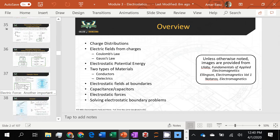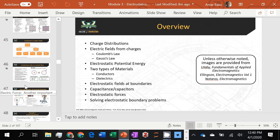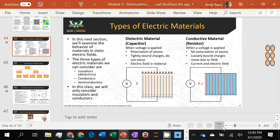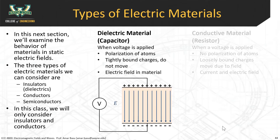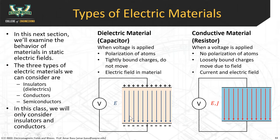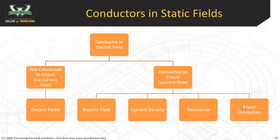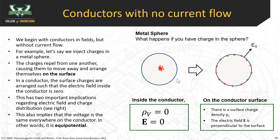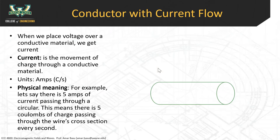Quick recap: last time we started talking about electric materials. The difference between a dielectric material and a conductive material is that a dielectric material polarizes in the presence of an electric field with no current, while in a conductive material there's a large current. The reason is that in a conductive material the charges can move, whereas in a dielectric material they cannot. We talked about a conductor in a static field — charges move to the outside, repel each other, and so the electric field inside a conductor is generally zero.